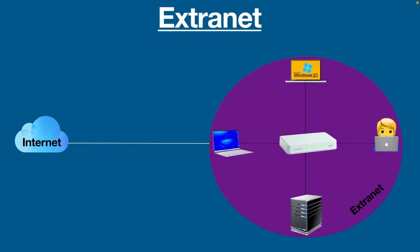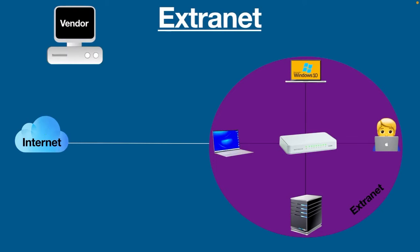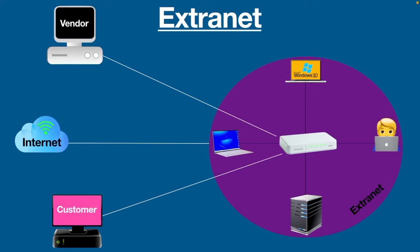Now, extranet — "extra" means outside. It's a subsection of an intranet where not only insiders, but also outsiders — such as vendors, partners, suppliers, and customers — can access information hosted on a company's intranet, if they have permission. Just like an intranet, it is also controlled by a private network. In simple words, an intranet is for employees and an extranet is for external stakeholders.